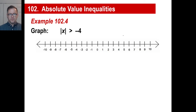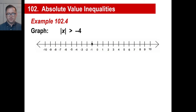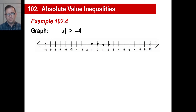Here's another one: the absolute value of x is greater than negative four. Let's try some and see. How about negative one? The absolute value of negative one is one. Is that greater than negative four? Yeah, it is — it works. Zero works. One, two, ten all work. Negative ten works too, because the absolute value of negative ten is ten. Is ten greater than negative four? Yep. In fact, everything is going to work because the absolute value of anything is going to be better than a negative.